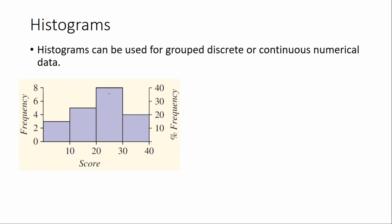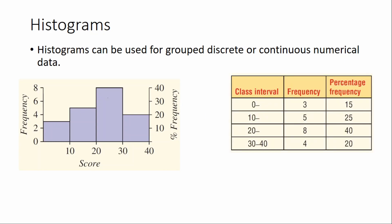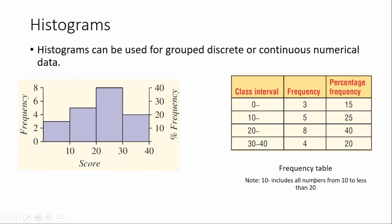We can also create a frequency table using a histogram, or vice versa. The first group, 0 to 10, has three people, which is 15 percent. Note that the '10 dash' notation means it includes all numbers from 10 to less than 20 — it doesn't include the score 20. To calculate the percentage, you do 3 divided by 20 times 100, which gives you 15 percent.